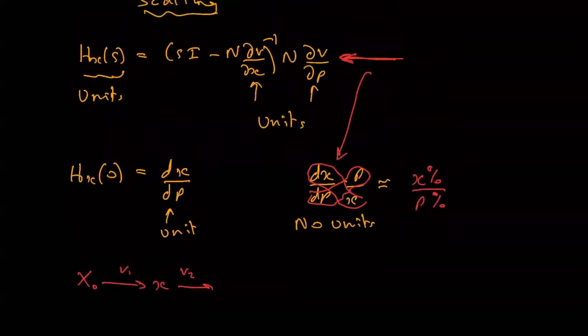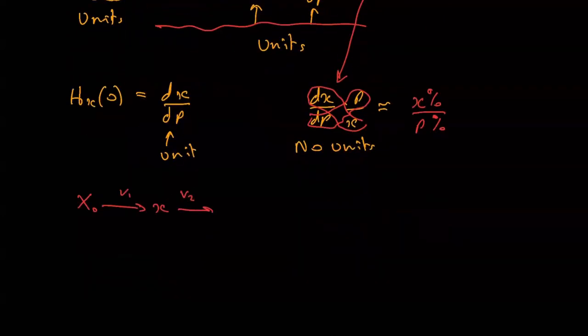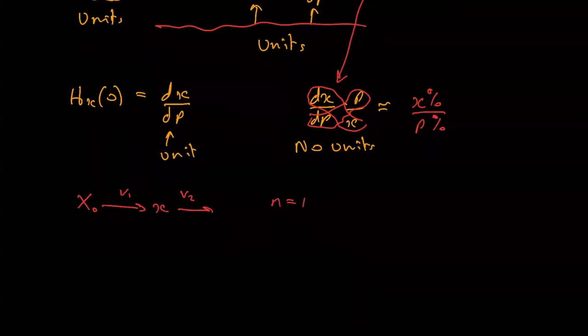What I need to do is to compute this thing. So little n is one, one state variable, number of reactions is two, number of inputs one. We'll just stick to that.